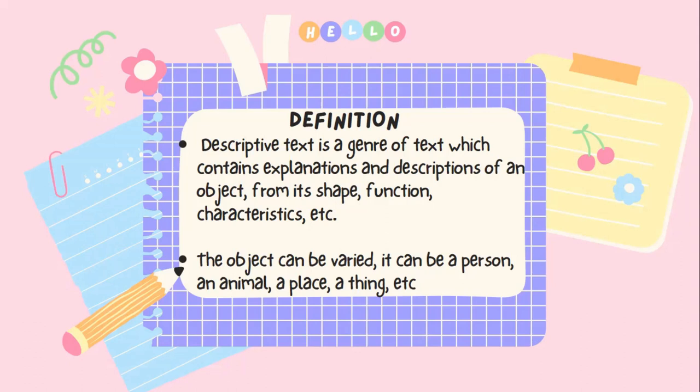And the object can be a person, an animal, a place, or a thing. Jadi, objeknya itu sendiri bisa bervariasi — bisa orang, hewan, tempat, ataupun benda yang digambarkan atau dideskripsikan secara merinci.